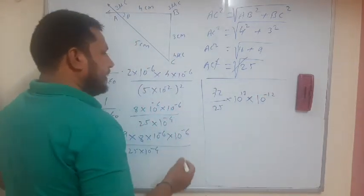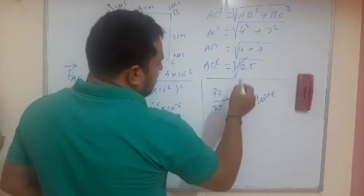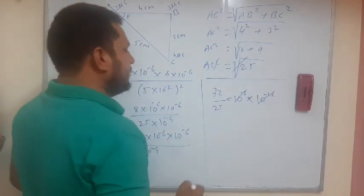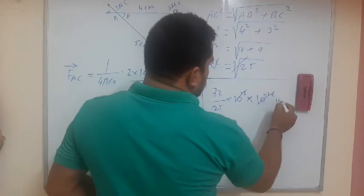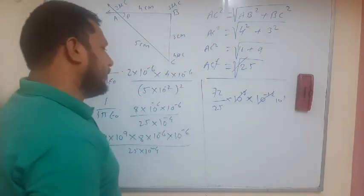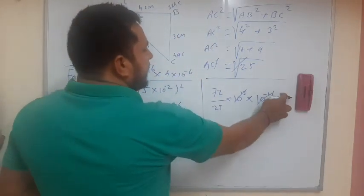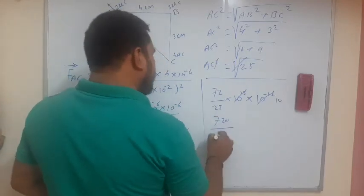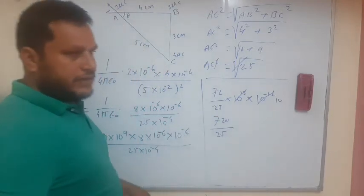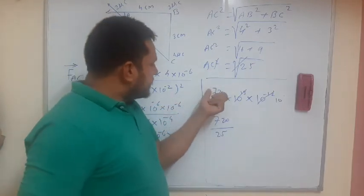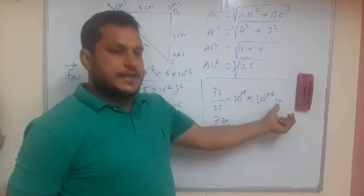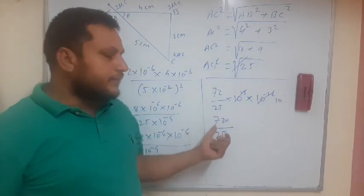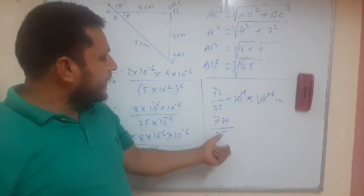Then this minus 12 cancel with plus 12 and we are having here the value of last is what? 10 raise to 1. Just multiply this 10 with this 72. It means what? 720 divided by 25. Here this 72 multiplied with this 10 that is what? 720 divided by 25.